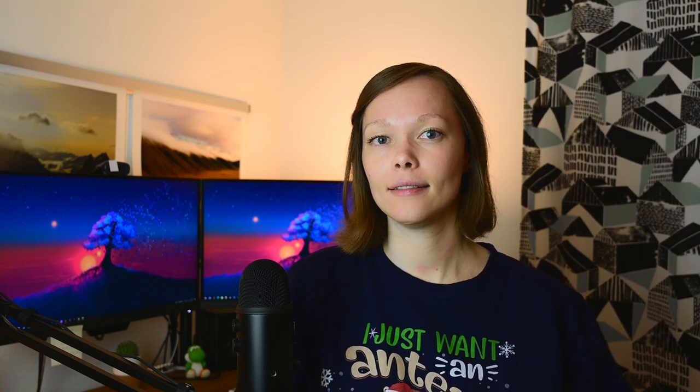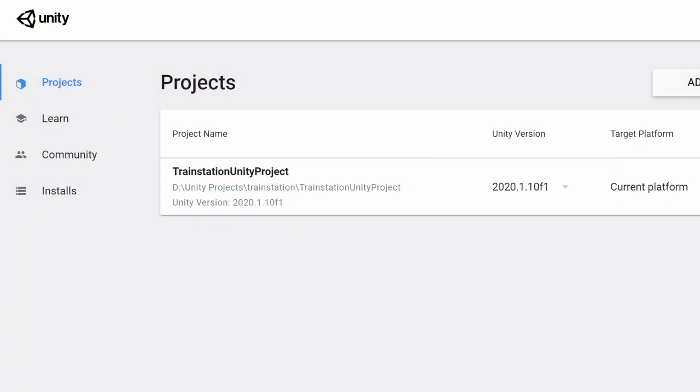Alright, before we dive into this and get into collisions, I want to fix something. The game doesn't have a title yet. Well, it's currently called Train Station Unity Project, which might not be optimal.